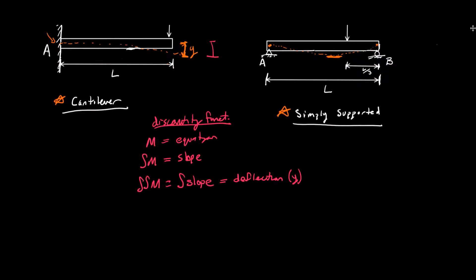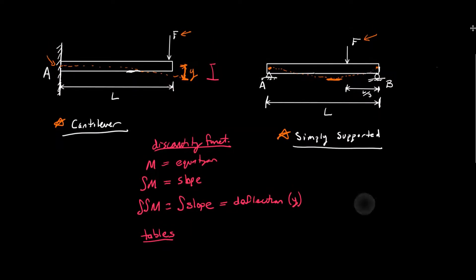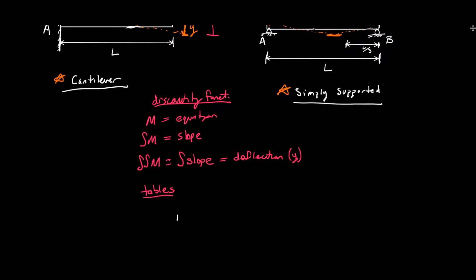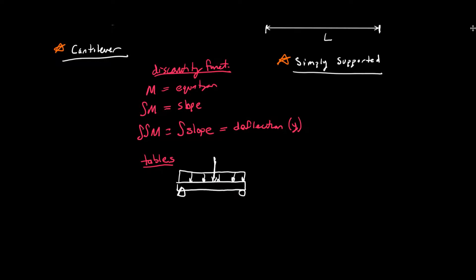The other way to solve beam deflection is using tables in the back of your textbook. These tables have equations for each different type of loading. For example, if you had a simply supported beam with a distributed load over the whole thing and also a concentrated load in the middle, there would be an equation for the slope and the deflection Y. You could use the equation for the distributed load and add the equation for the concentrated load to get the total Y at the midpoint. This applies to both slope and cantilever beams as well.